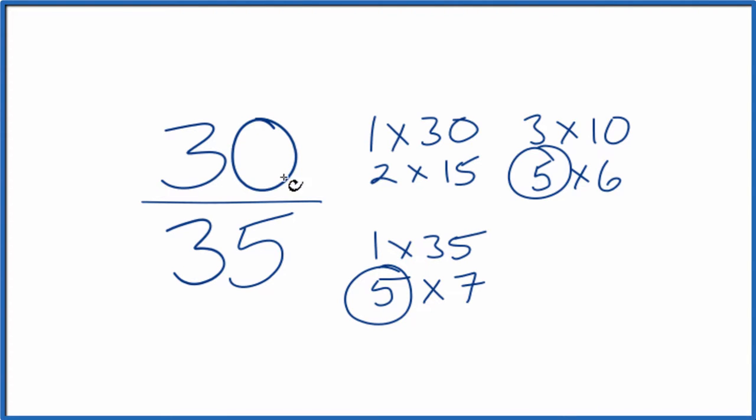So we could divide 30 by 5 and we'll get 6. And then if we divide 35 by 5, we get 7 and we end up with 6/7.